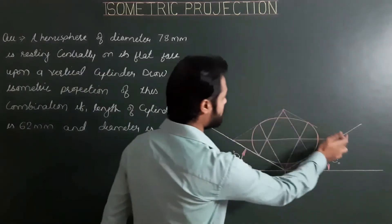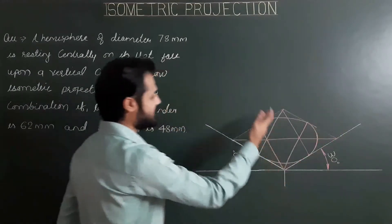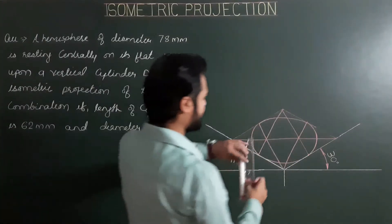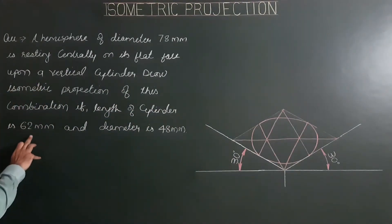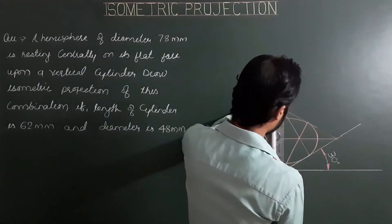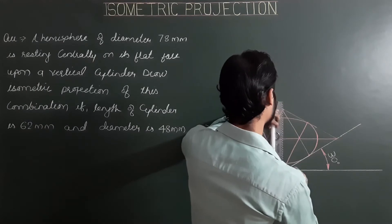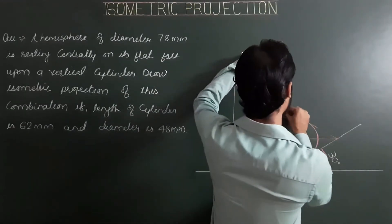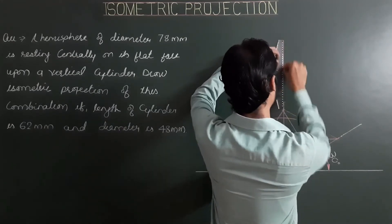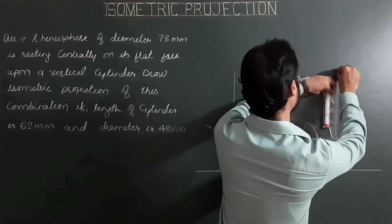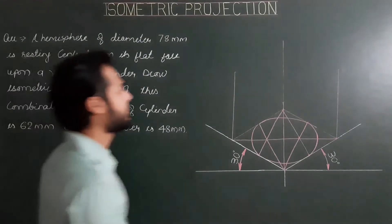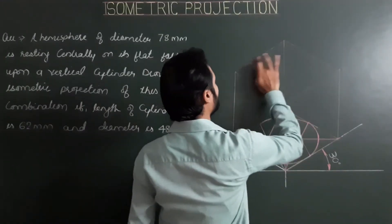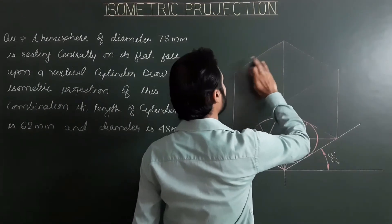Next, from all four corners of the helping square, draw the lines or generators of the helping box — lines from all four corners parallel to the third or vertical axis. The height is 62, so we take isometric length corresponding to 62 mm from each point, parallel to the third axis. Then joining all corners of the upper helping square.